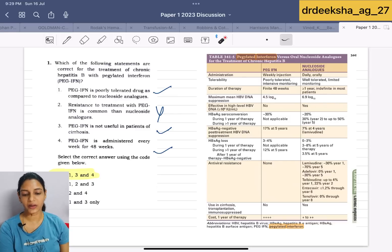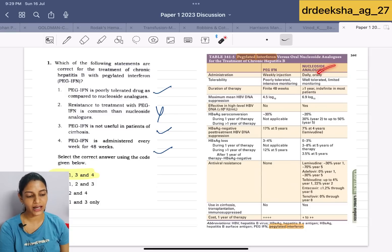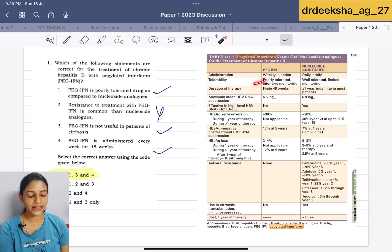In the first question, they were talking about the treatment for chronic hepatitis with pegylated interferon. In Harrison, there was a difference given between pegylated interferon and nucleoside analogs. First statement, they are saying as compared to nucleoside analogs, it is a poorly tolerated drug. Yes, it is poorly tolerated as compared to the nucleoside. Nucleosides are well tolerated. This statement is right.